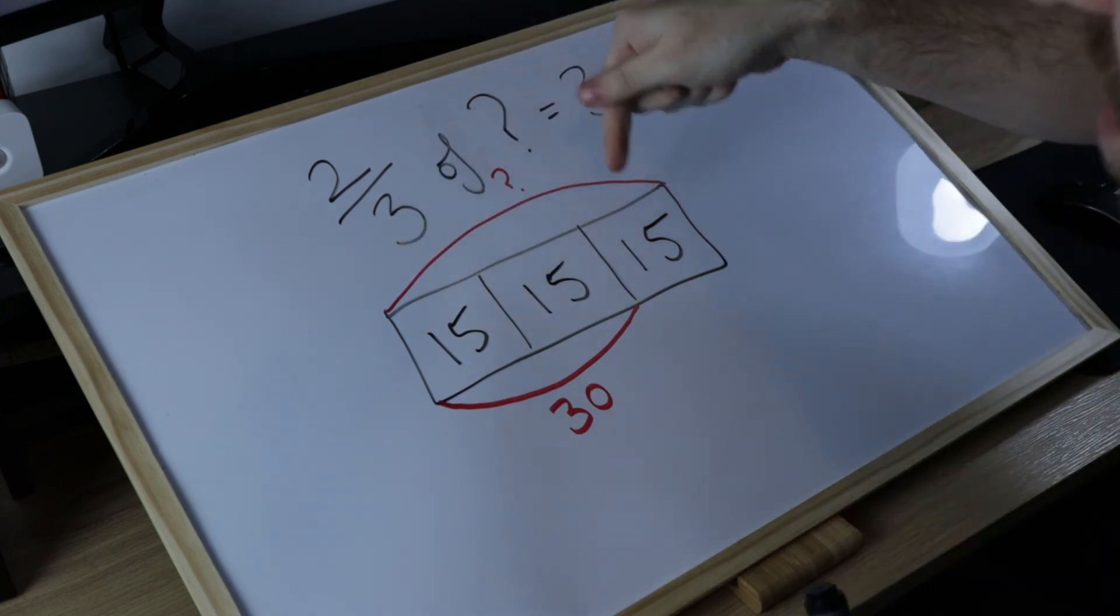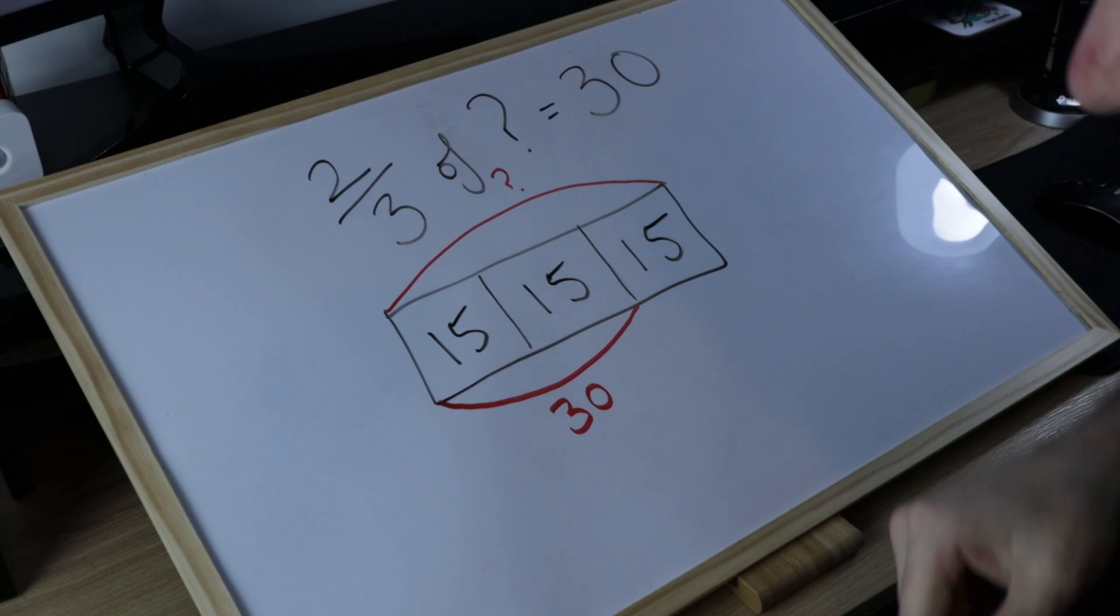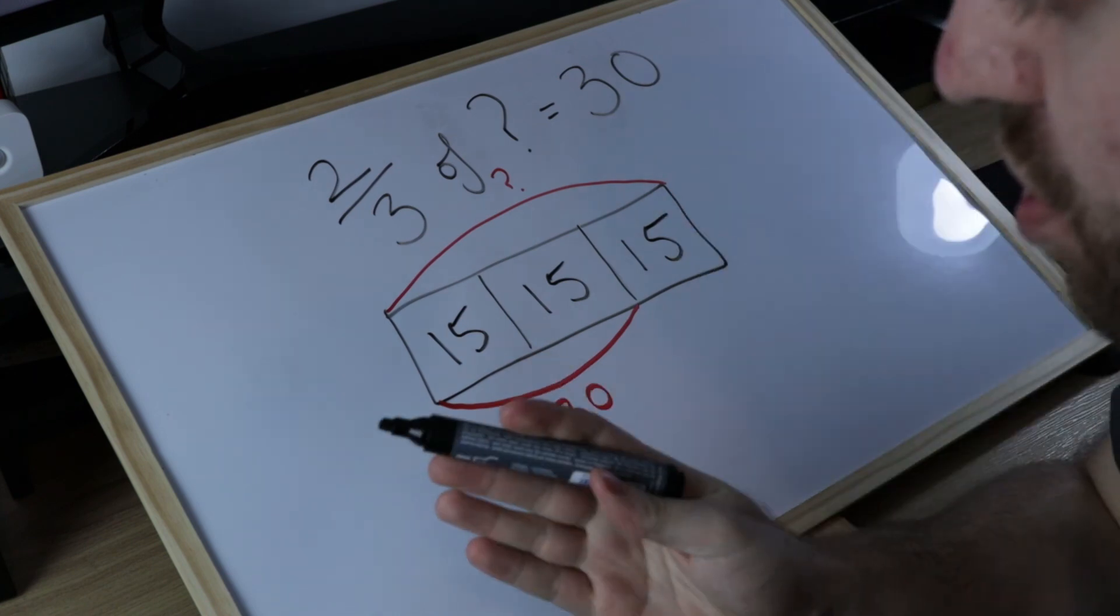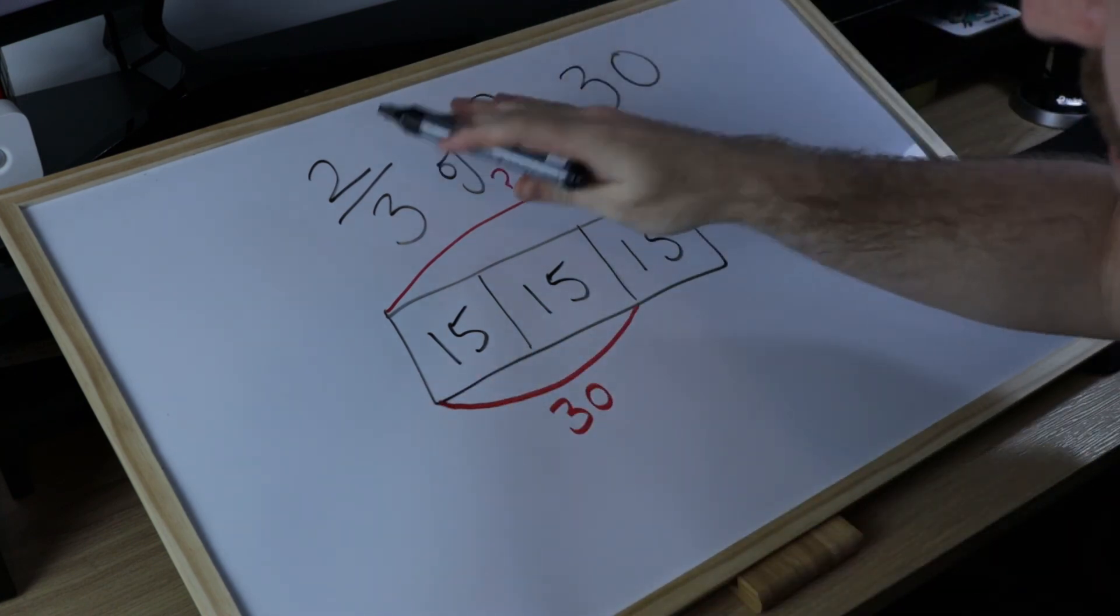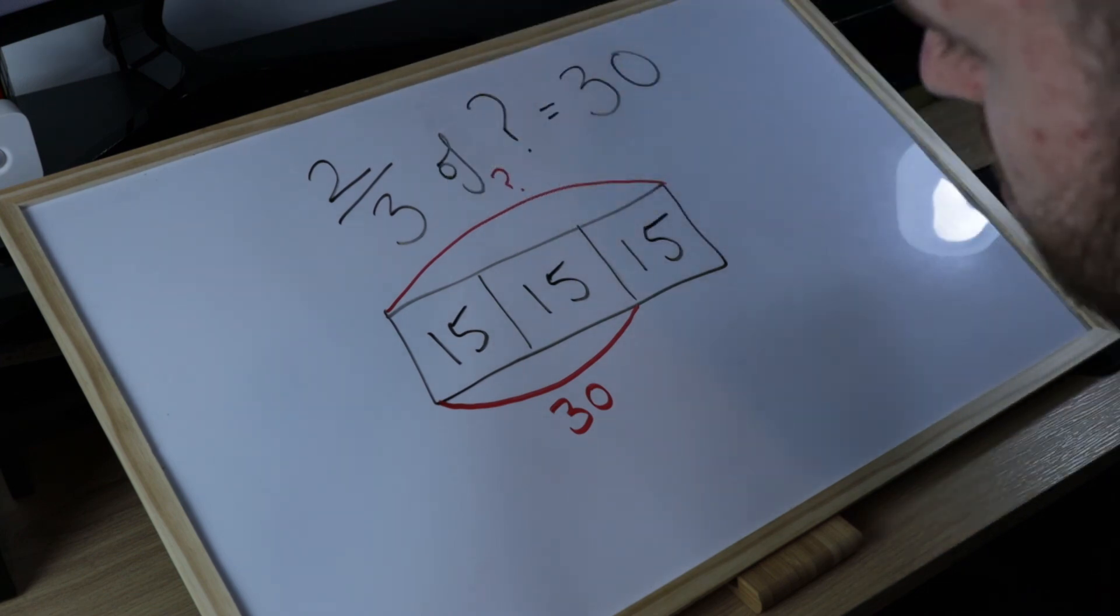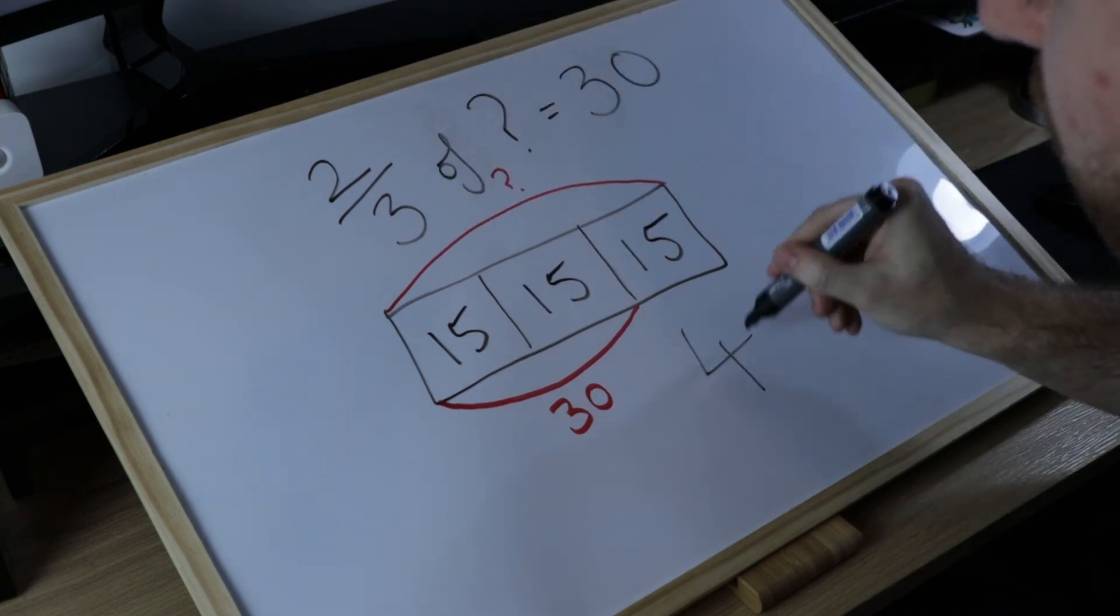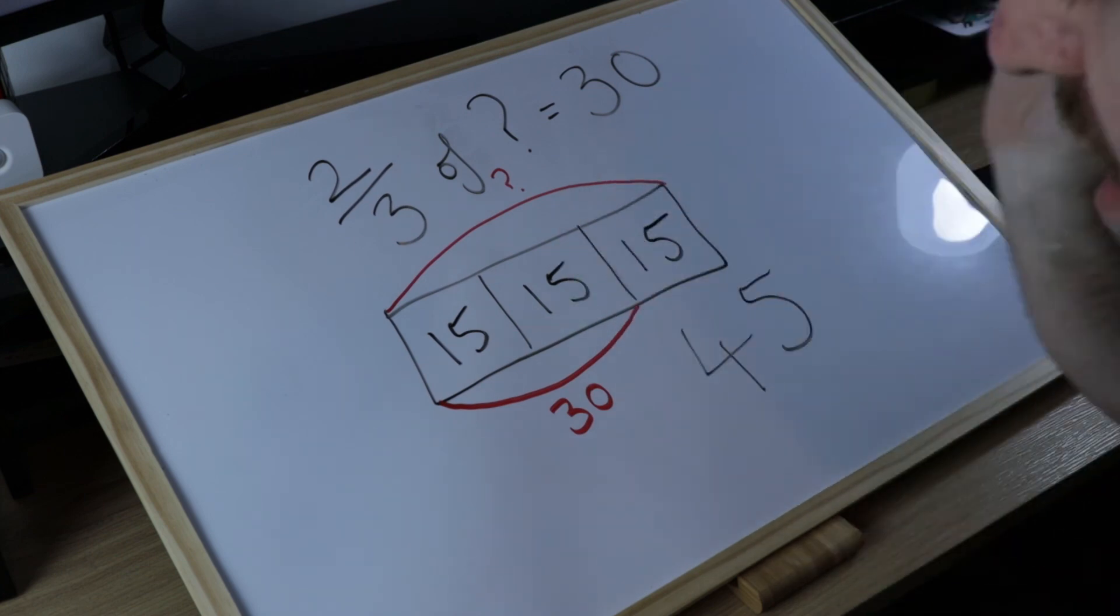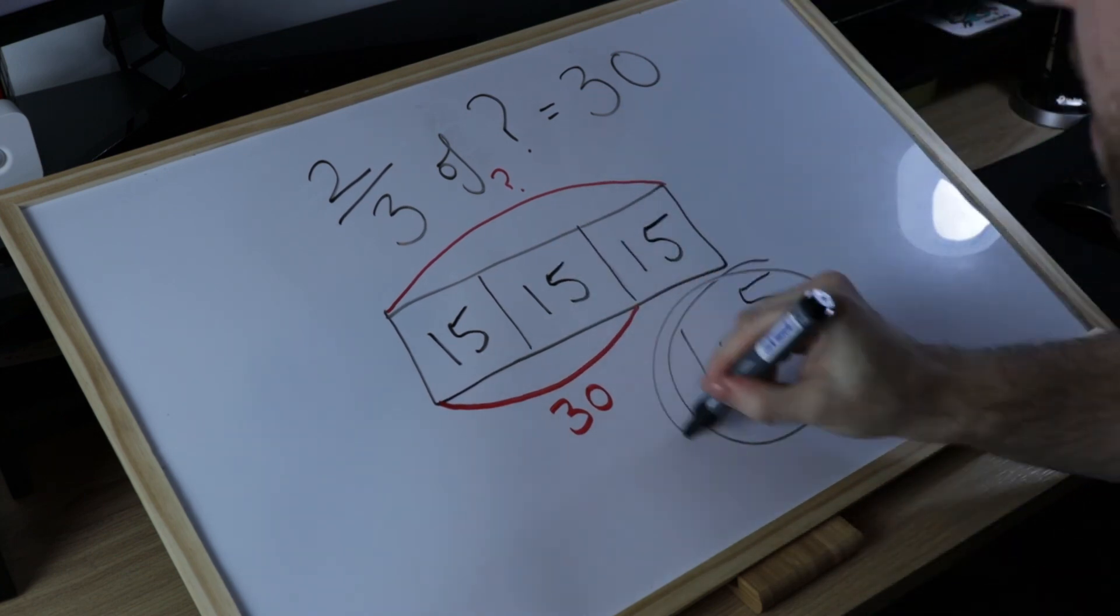We have three-thirds, three lots of 15. Therefore the answer to this question is not 20 because it's been flipped around. The answer to this question, the quantity we're looking for, the total that's missing, is 45, and the bar model is a superb way to see that visually.